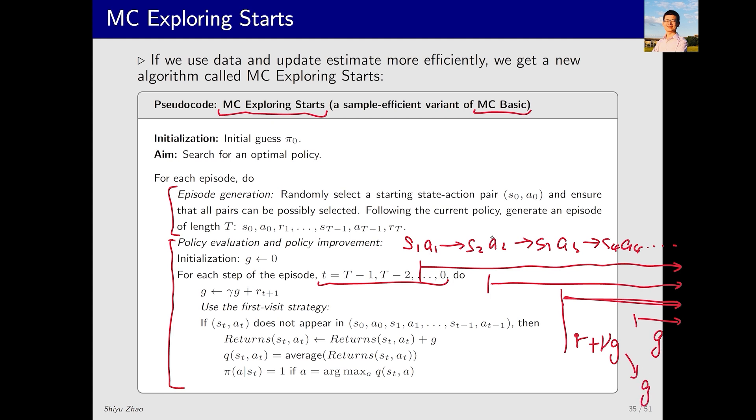I then take this as a new G, which can be used to calculate the return for S2A2. Similarly, it's R plus γG, where R is the reward obtained from S2A2. This backward inference allows us to efficiently compute the return. So, when you're looking at various algorithms, do they look so complex? Now you know that it's all about using these small tricks to enhance computational efficiency.